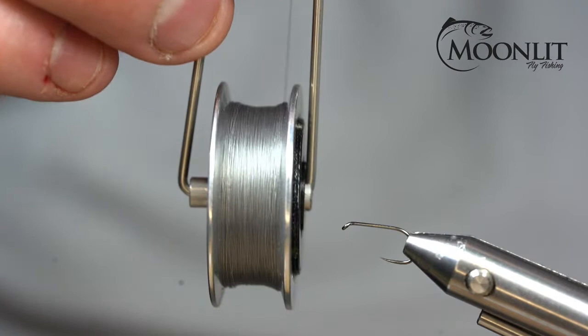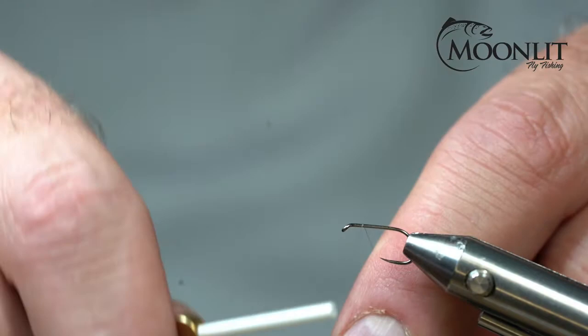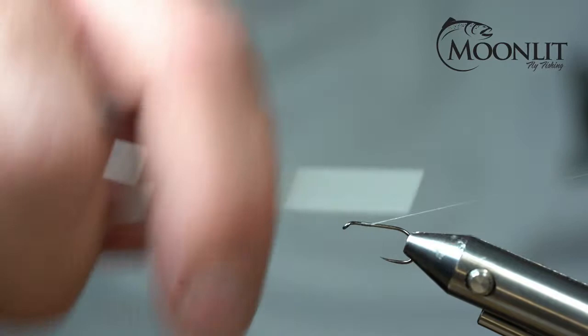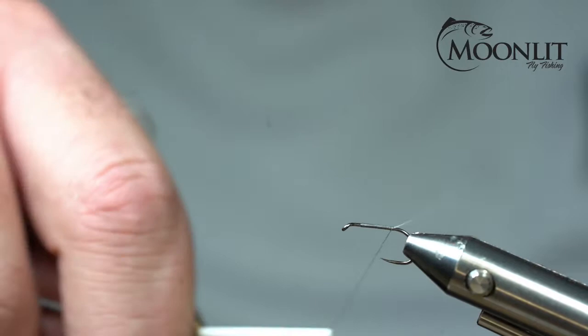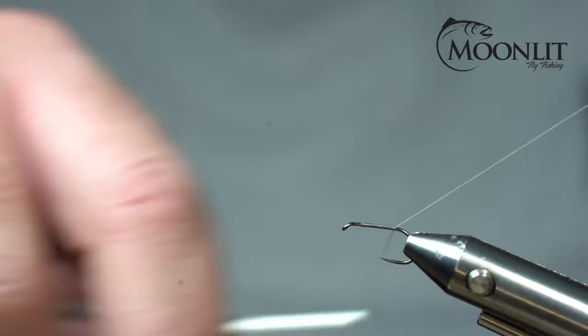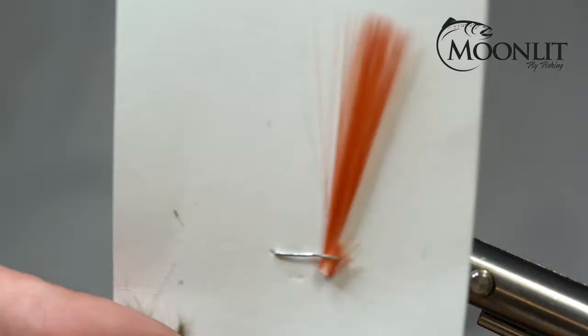For my thread I'm going to be using Semperfly Classic Wax in the steel color and this is on my Norvise automatic bobbin. This is an amazing product here. I'm going to start my thread about three quarters of the way. I'm going to build my body first. I know this is a little bit backwards but just bear with me, this is the way I like to do it. I'm going to start roughly where I'm going to tie in my post anyways. So I'm going to go to the bend and leave that tag end of thread there.